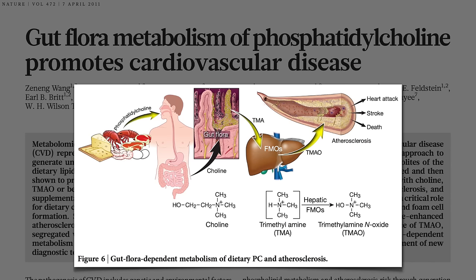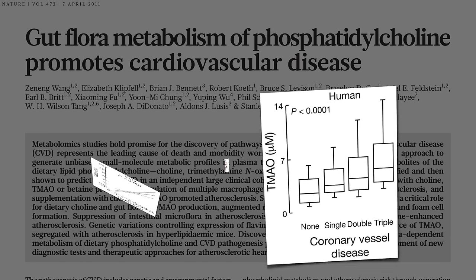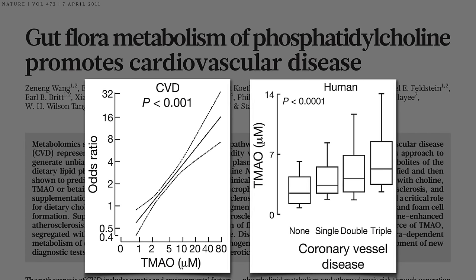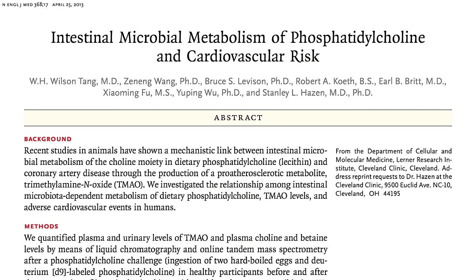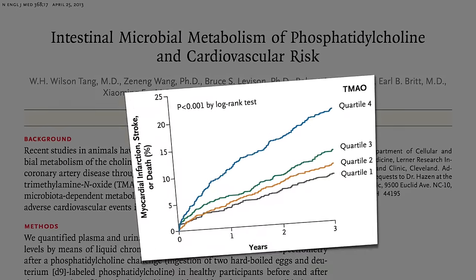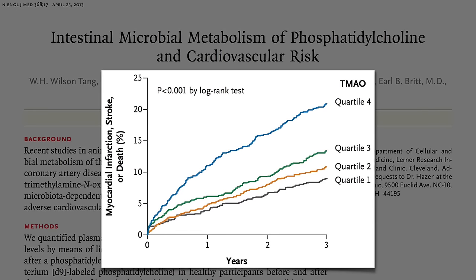But just because at a snapshot in time people with heart disease tend to have higher TMAO levels, it doesn't mean having high TMAO necessarily leads to bad outcomes. We'd really want to follow people over time, which is what they did next. 4,000 people were followed for three years, and those with the highest TMAO levels went on to have significantly more heart attacks, strokes, or death.